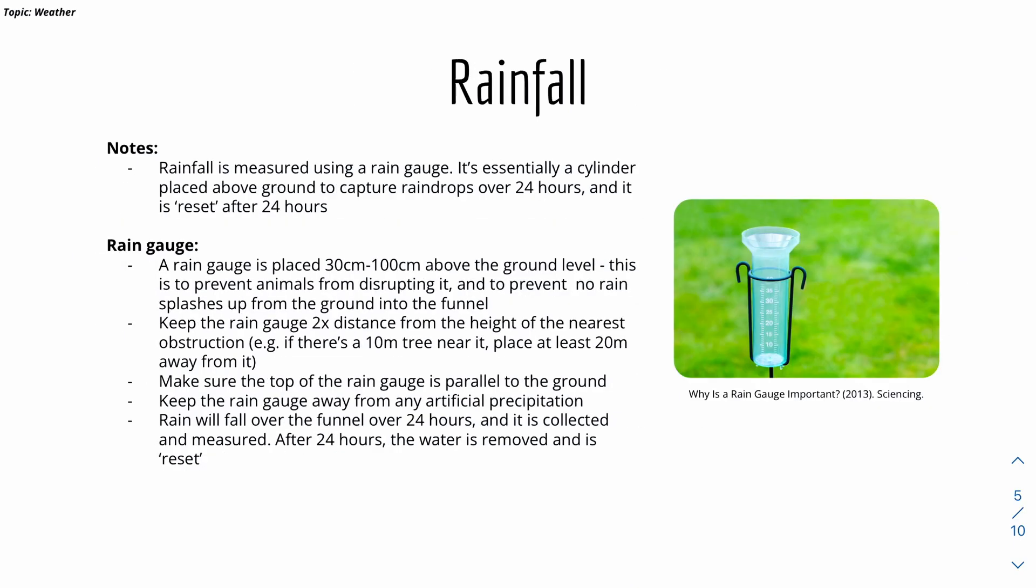We'll now look at rainfall. As mentioned before, rainfall is measured using a rain gauge. We have a photo here of a rain gauge. It's basically a cylinder that is placed above ground to capture raindrops over 24 hours. After 24 hours, it is basically reset.